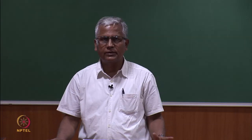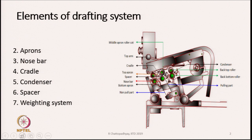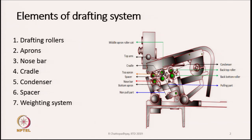Now we are going to discuss the drafting system of a roving frame. The elements of a drafting system or drafting unit are shown in a diagram on the right hand side. The main components of the drafting unit are: drafting rollers, aprons, nose bar, cradle, condensers, spacer, and a weighting system or weighting mechanism.